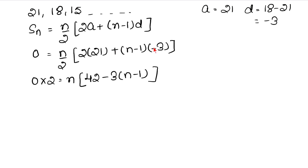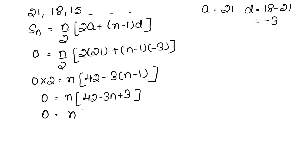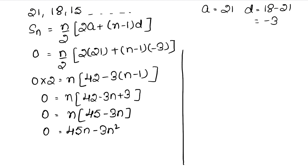Plus into minus, so it is minus। आगे करते हैं: 0 equals to n into 42 minus 3n plus 3। यह आ गया 0 equals to n into 45 minus 3n। Bracket खोला तो 45n minus 3n square आ गया। अब 3n square को इधर लाए: 3n square equals to 45n।